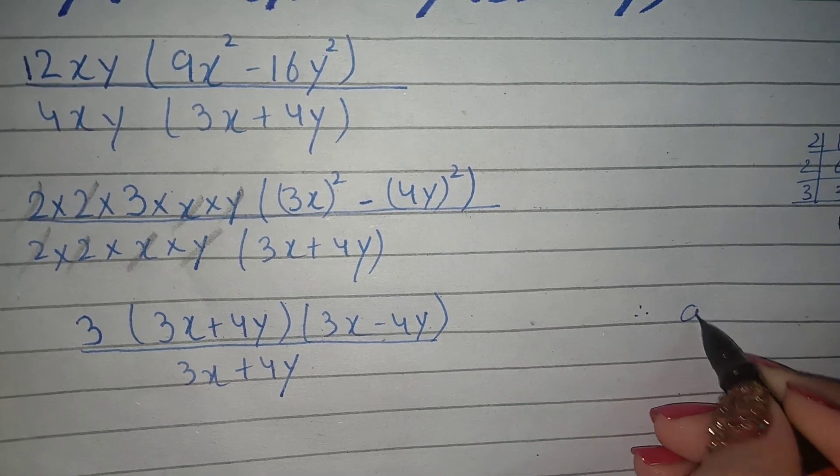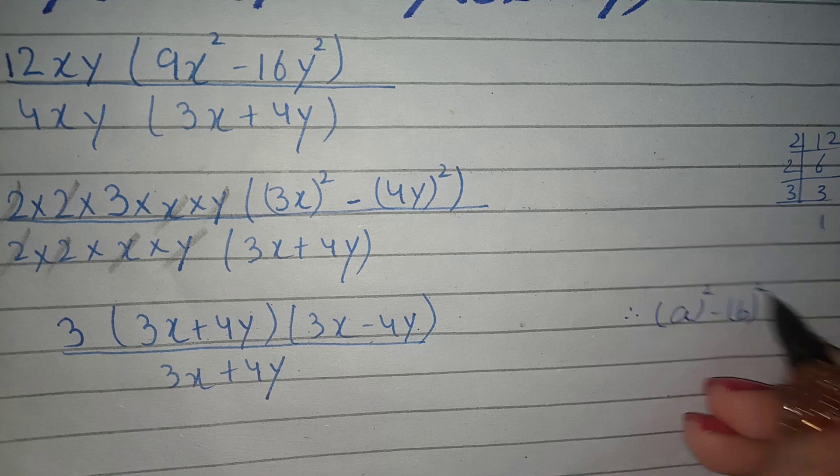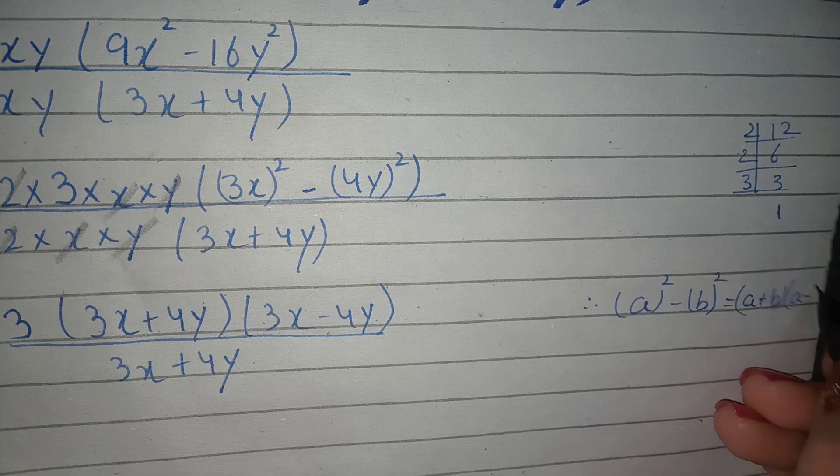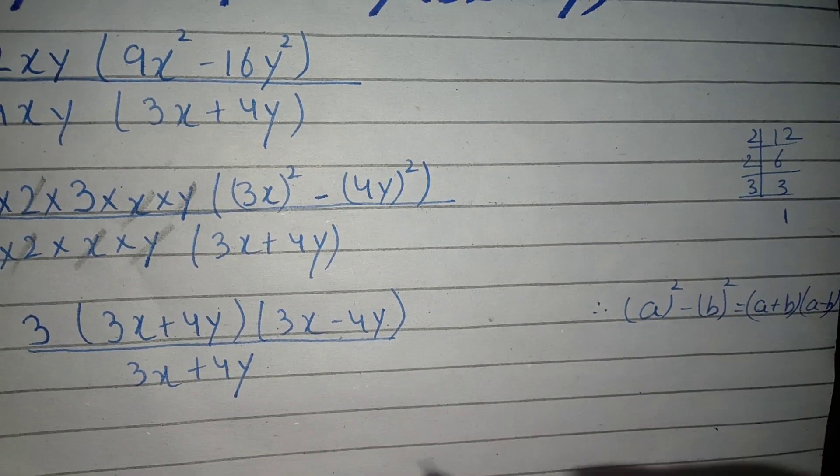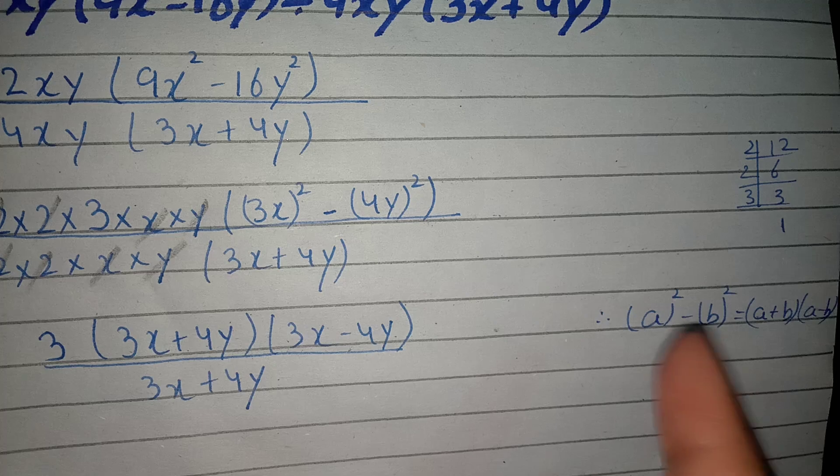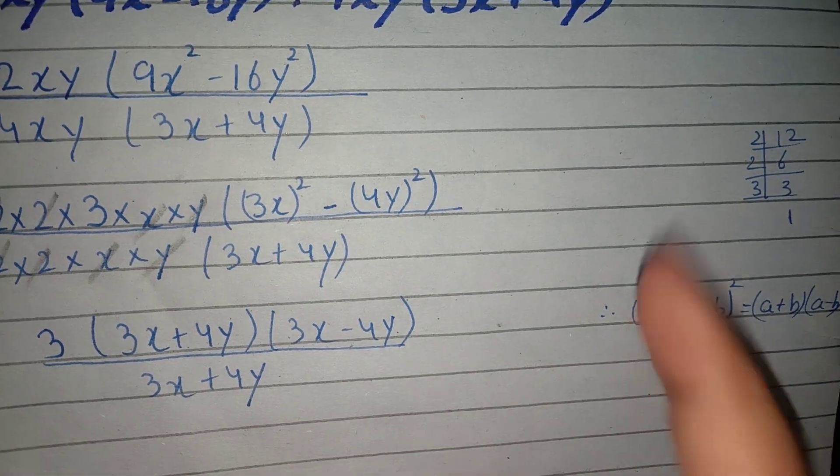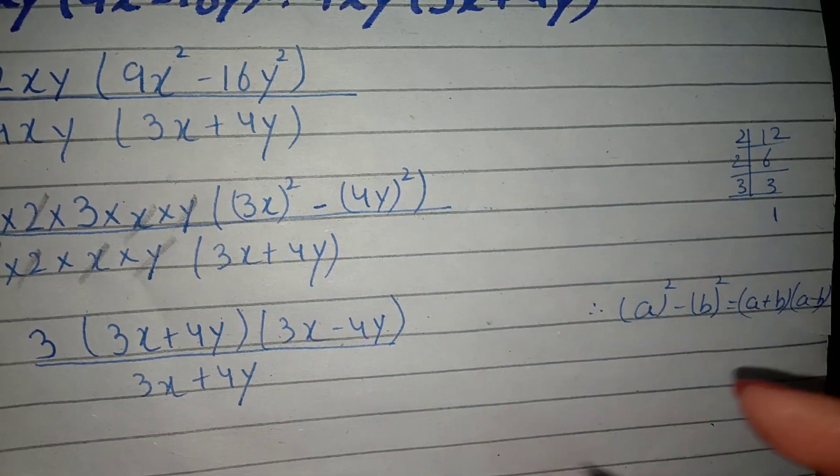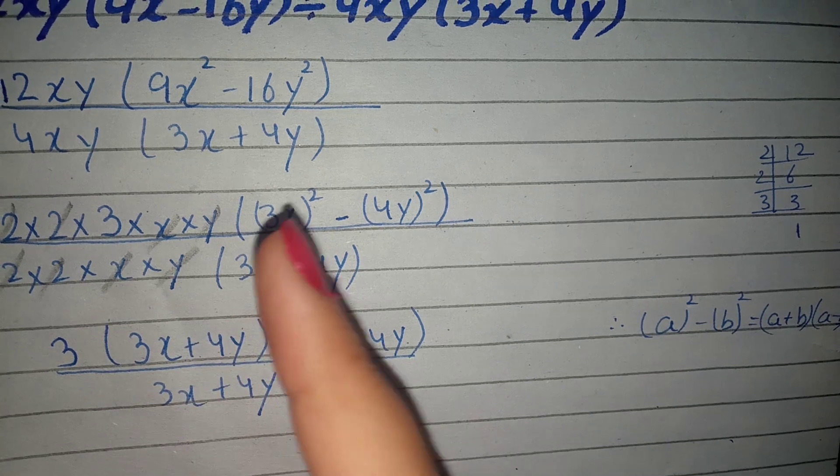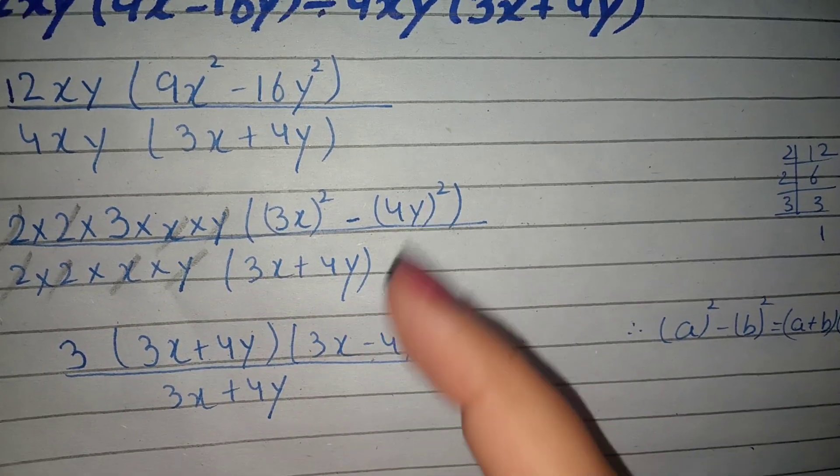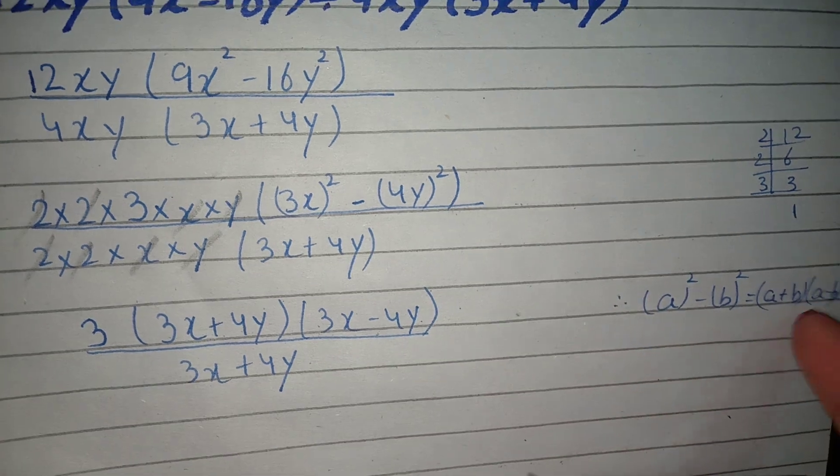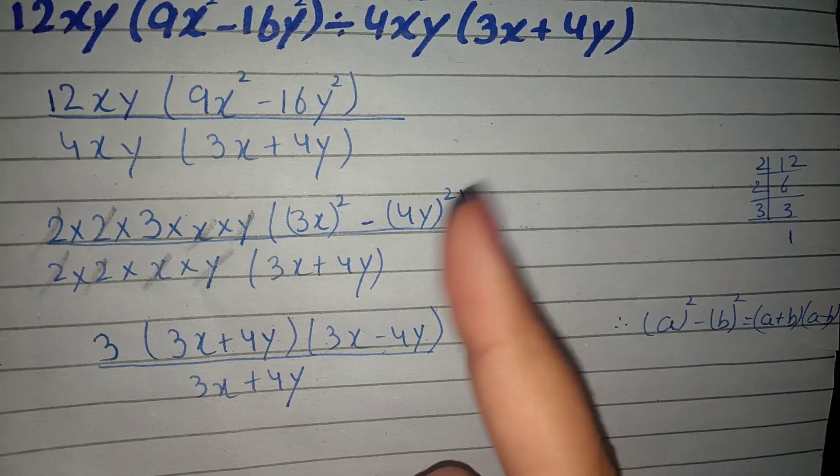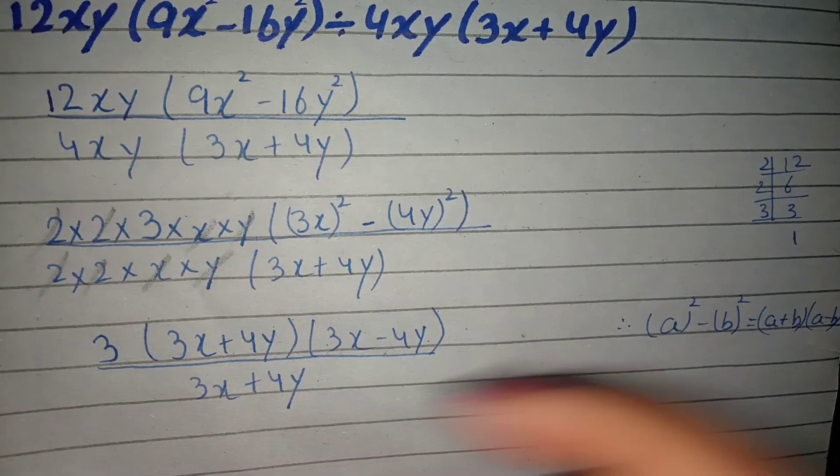The identity is a whole square minus b whole square equals a plus b times a minus b. So this whole square minus b whole square, then write 3x plus 4y times 3x minus 4y.